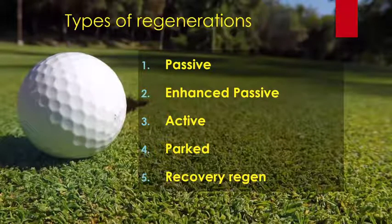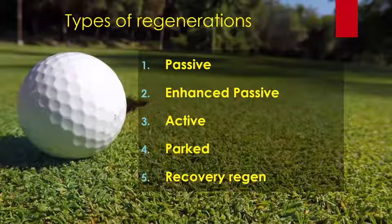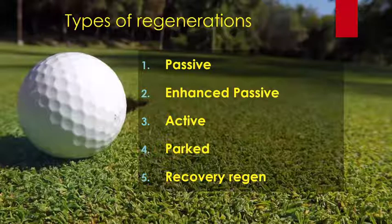Recovery regeneration is required if the soot in the DPF reaches a severe level. Running the vehicle with regenerations inhibited or not performing a parked regeneration when needed can cause a recovery regeneration to be needed. During a recovery regeneration, the vehicle must be parked. The ECU closes the air throttle and changes injection timing to increase exhaust gas temperature to a level that promotes passive regeneration, with no fuel dosed during this portion. After sufficient time passes and the soot level is low, a parked regeneration is performed before the recovery regeneration is complete, and the vehicle must remain parked until it has ended.